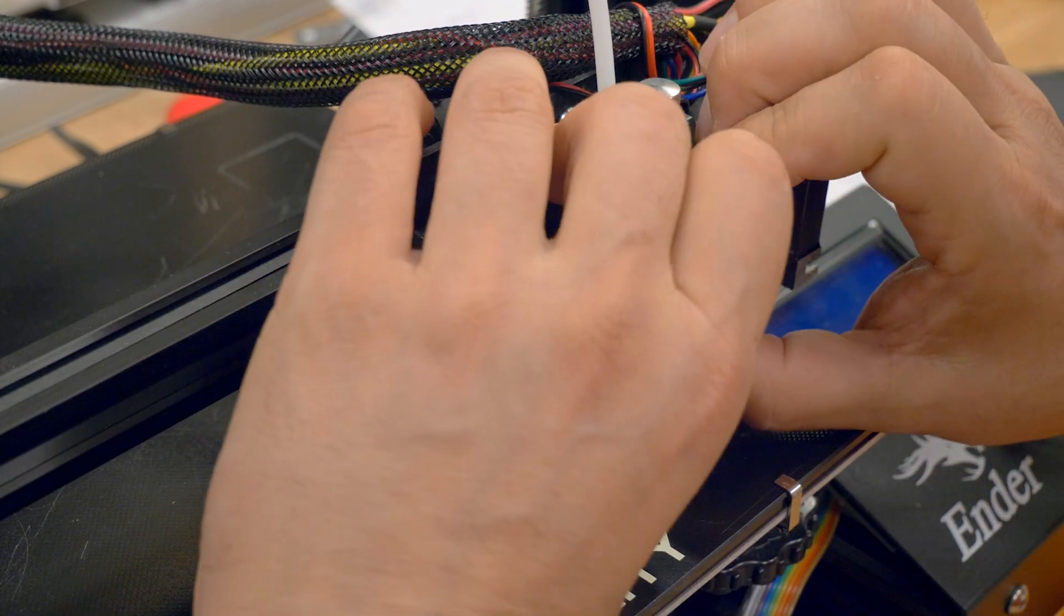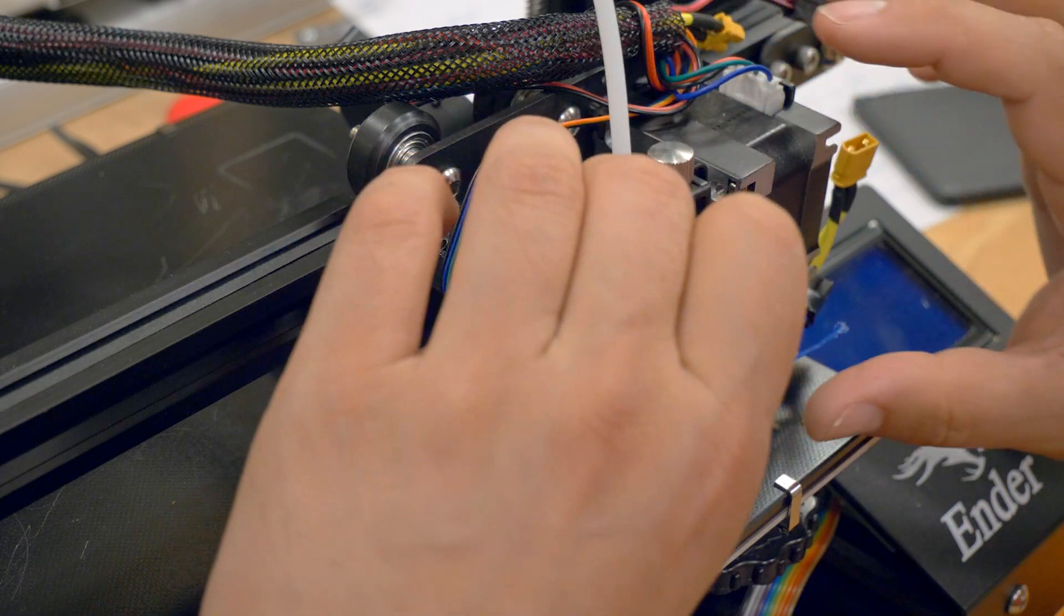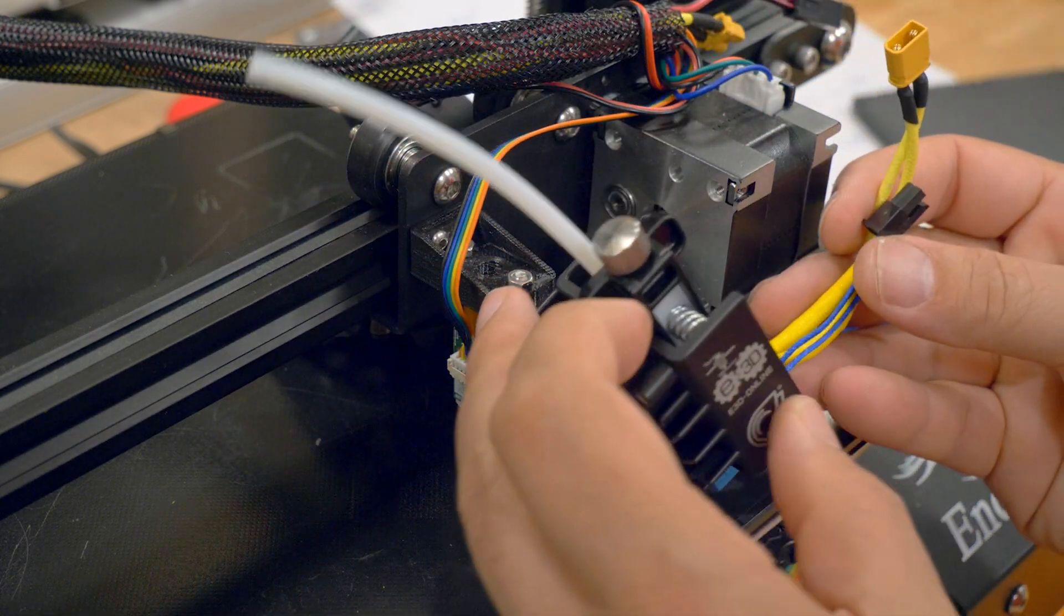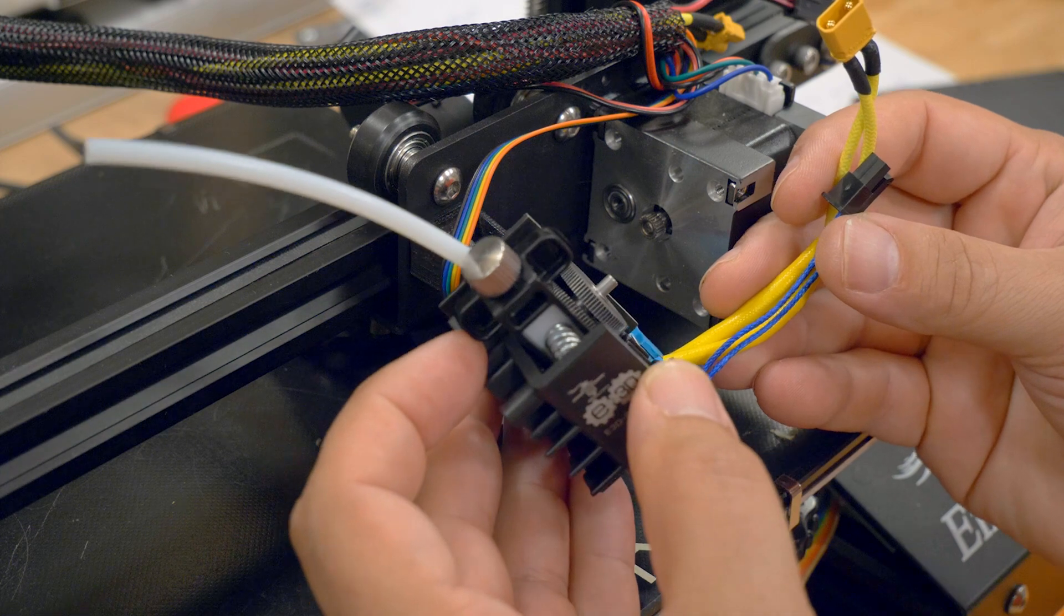Then the extruder assembly will just slide off. And that came off shockingly easy because this is not the first time I've done it.